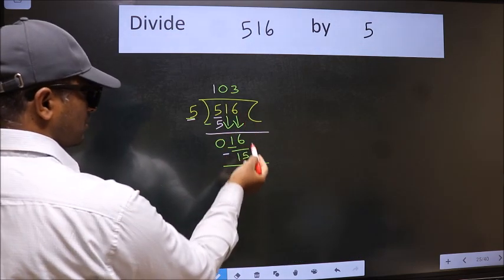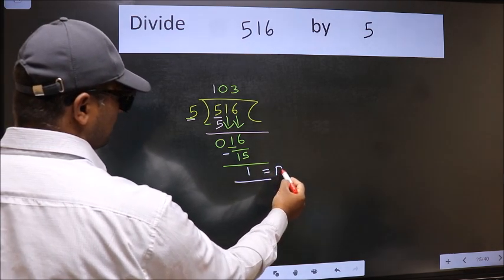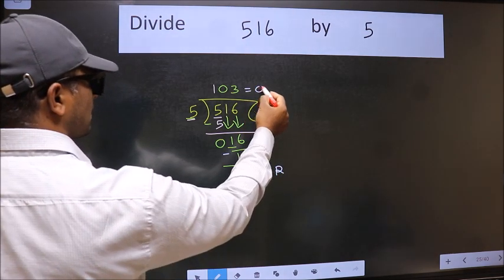No more numbers to bring it down. So we stop here. This is our remainder and this is our quotient.